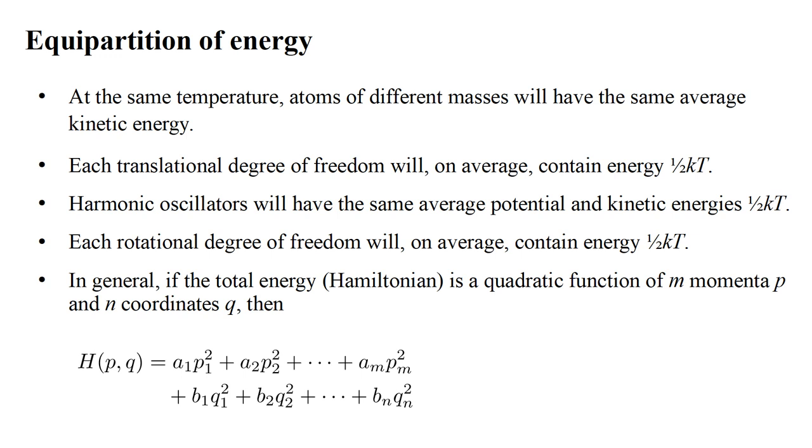Then the number of quadratic degrees of freedom in the system is m plus n, and the molar heat capacity at constant volume is the number of degrees of freedom over two, times the gas constant R.